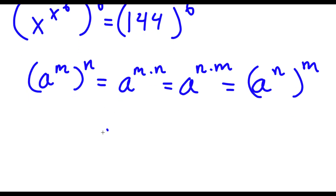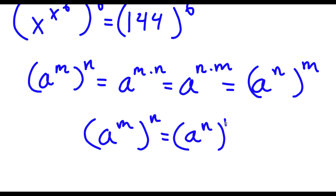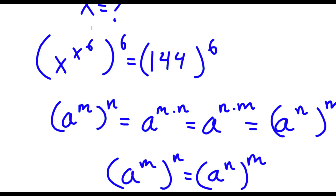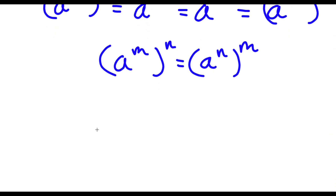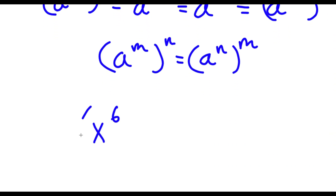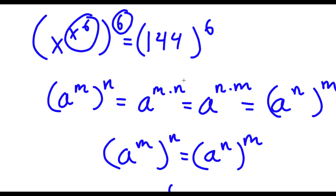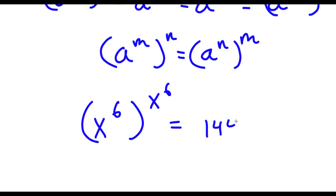So in simpler terms, a to the power of m to the power of n is equal to a to the power of n to the power of m. So in this case we have x to the power of x to the power of 6, all to the power of 6. We can think of x to the power of 6 as m and 6 as n, and switch their places. So now we have x to the power of 6 to the power of x to the power of 6, which is equal to 144 to the power of 6.